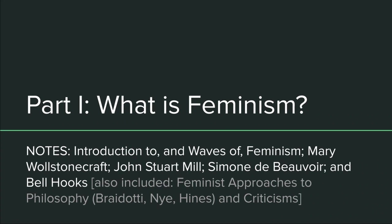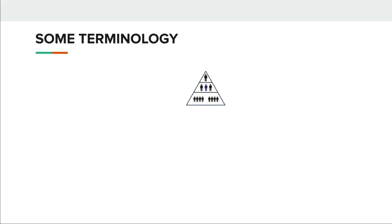To get us started, we're looking at part one of our text: What is Feminism? We're going to start off with some terminology to make sure we're all on the same page, because these terms are used a lot in everyday language either incorrectly or with different background assumptions. The first term is feminism itself. It comes from the French femme, meaning woman, and the -ism refers to a political position — not just one's ideology but also one's actions.